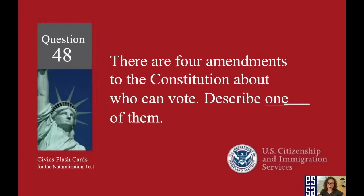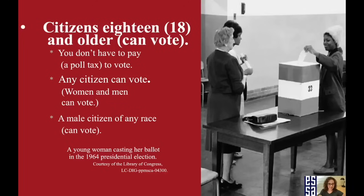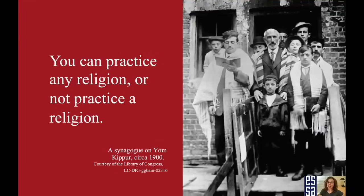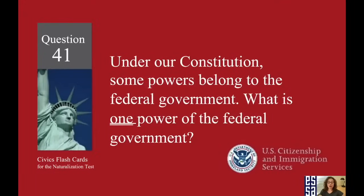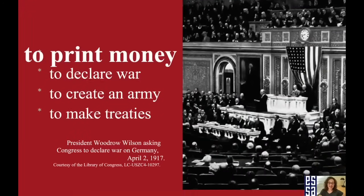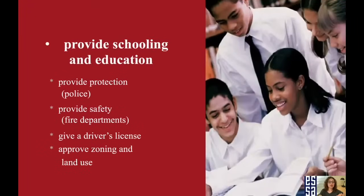There are four amendments to the Constitution about who can vote — describe one of them. Citizens 18 and older can vote. What is freedom of religion? You can practice any religion or not practice a religion. Under our Constitution, some powers belong to the federal government — what is one power? To print money. Some powers belong to the states — what is one power of the states? To provide schooling and education.